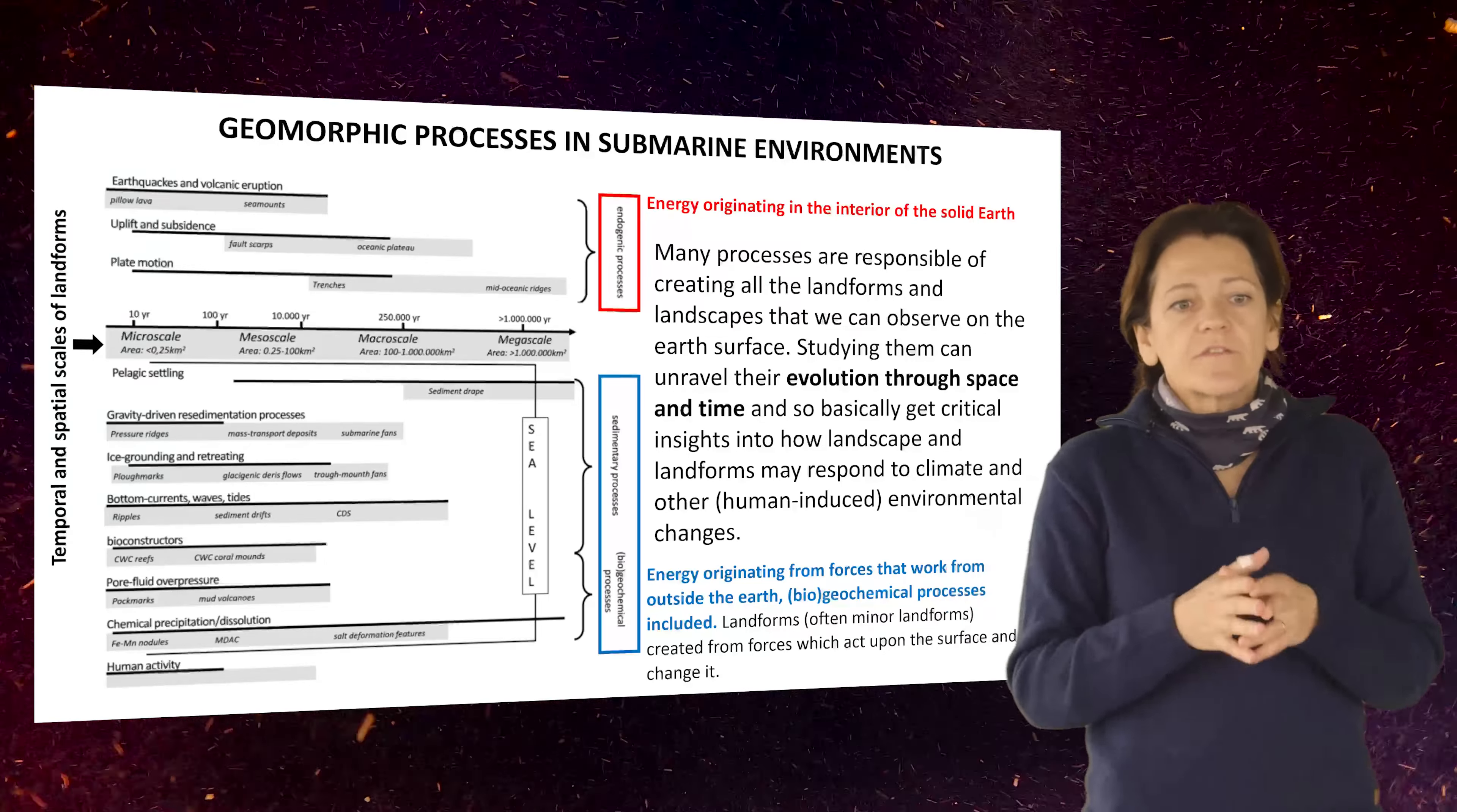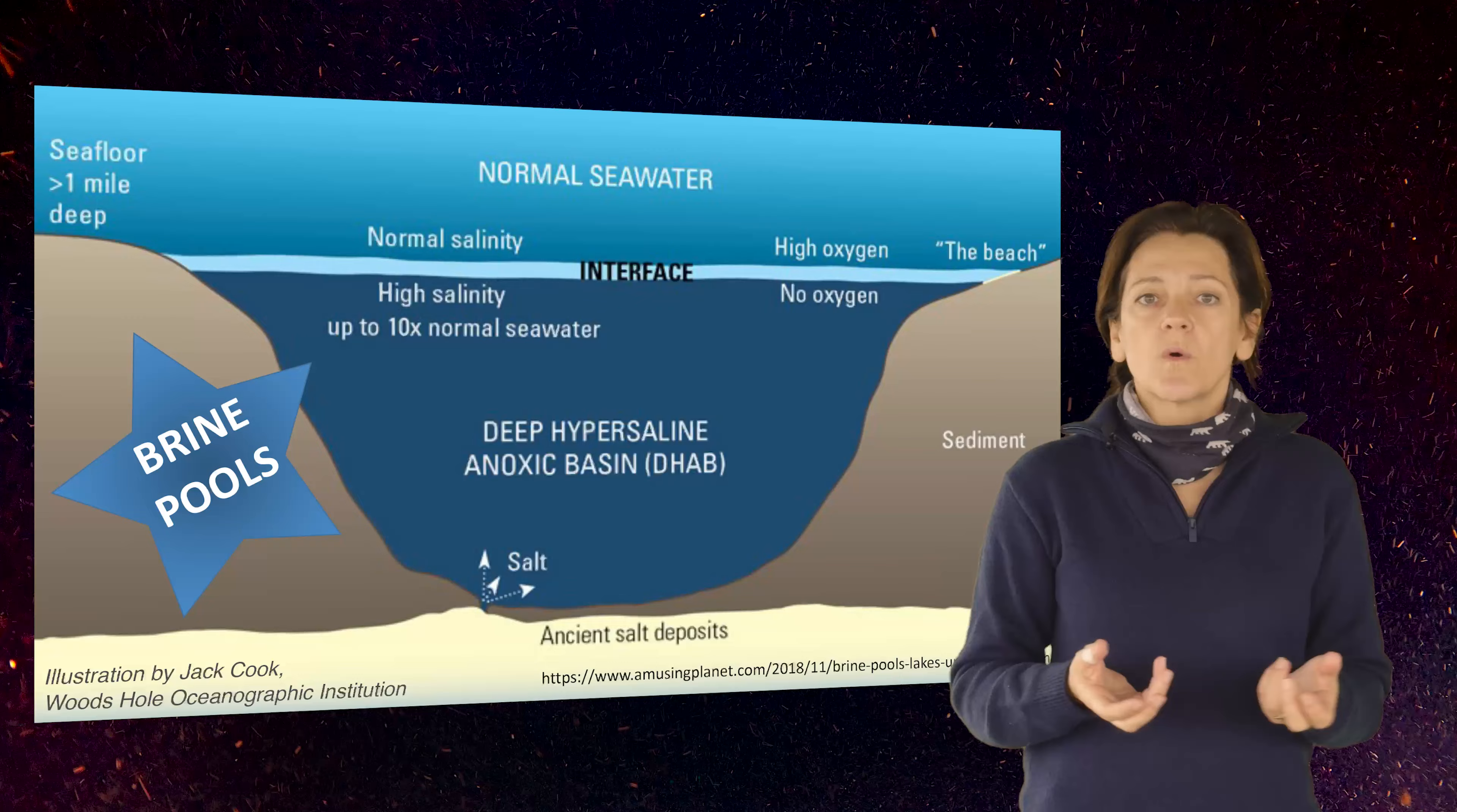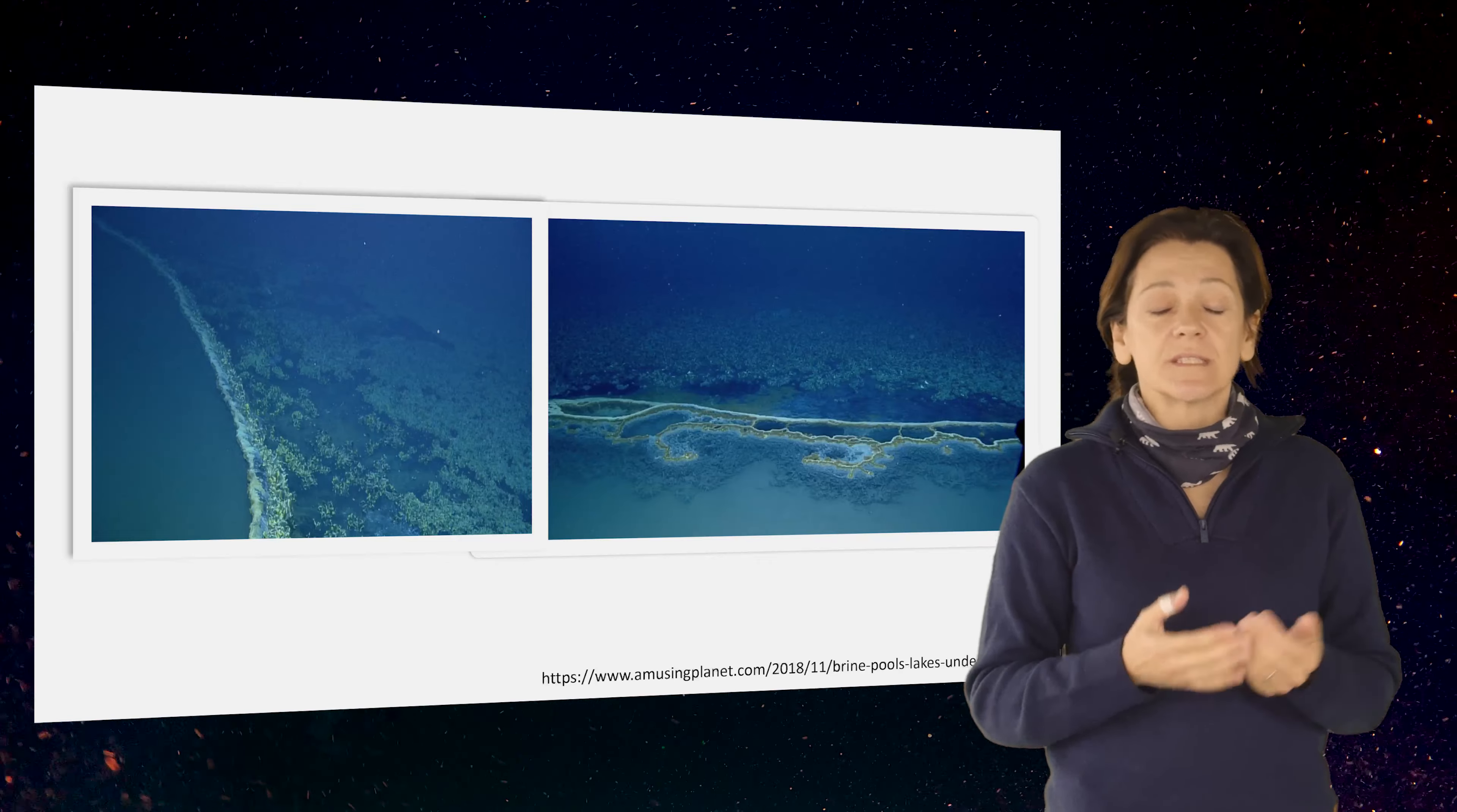The submarine landforms that characterize extreme environments in the deep sea actually include a variety of landforms. And some of them are more known than others, for example, the hydrothermal vents, and some others are less known, for example, the brine pools. These are underwater basins separated from the water mass, where salt or other chemical compounds can be melted by seawater and create brine pools totally separated from the water mass. And here specific processes, specific organisms can survive in this extreme environment. But some of the most widespread, even if extreme environment, and especially in the Arctic sea, are definitely the cold seeps.